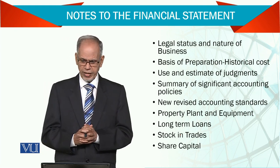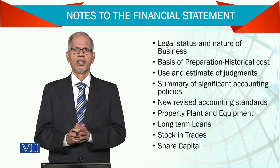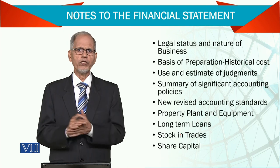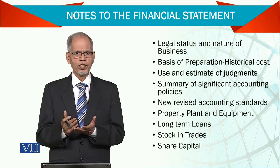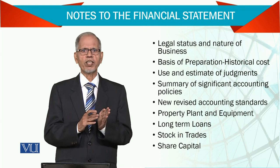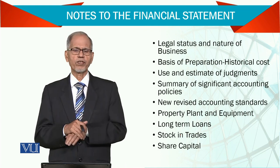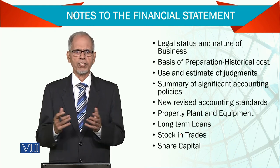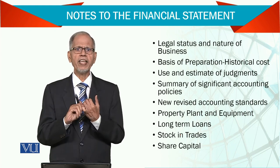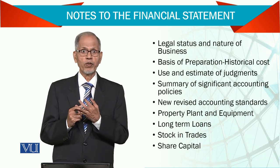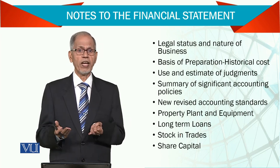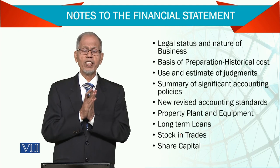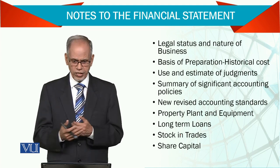Though we use estimates and judgments as well — management is allowed to use judgment. For example, how much depreciation should be charged? It is not necessarily the exact amount of reduction from the asset account; we just estimate — maybe 10%, maybe 20%. For buildings, maybe 2%, but for motor vehicles, maybe 25%. So here we use our own judgment as to what amount we are supposed to charge to the income statement.